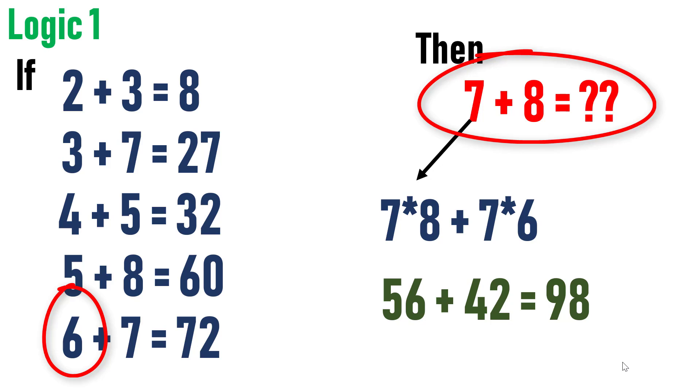This is logic 1. If the question is asked not to make any assumptions to solve the problem, then this logic will not work because we have already done one assumption that the prior equation of the first equation starts with 1. So let's check the second logic.